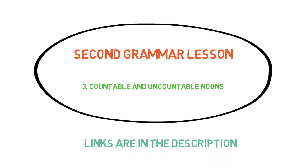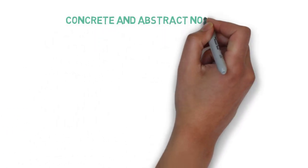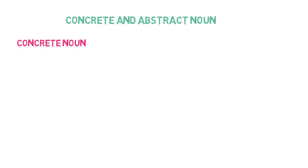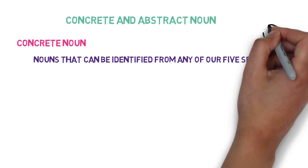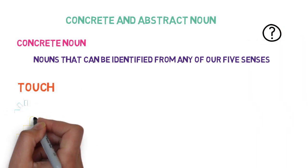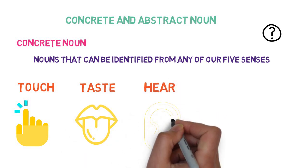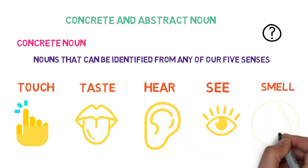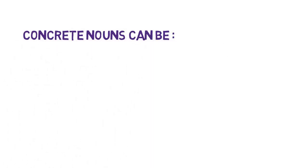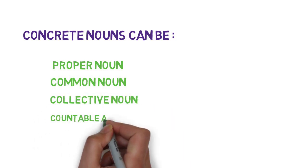Now let's look into the last category of nouns, that is concrete nouns and abstract nouns. Concrete nouns are nouns that can be identified from any of our five senses. What are our five senses? We touch through our hands, we taste through our tongue, we hear through our ears, we see through our eyes, and we smell through our nose. Concrete nouns can be proper nouns, common nouns, collective nouns, and countable and uncountable nouns.